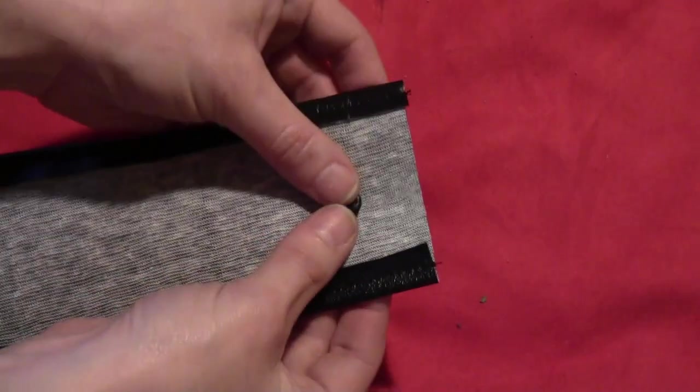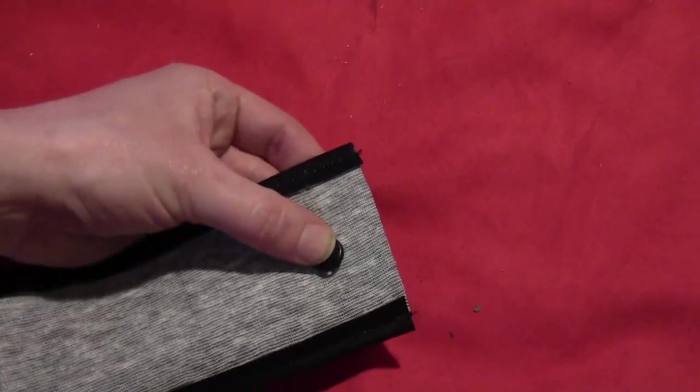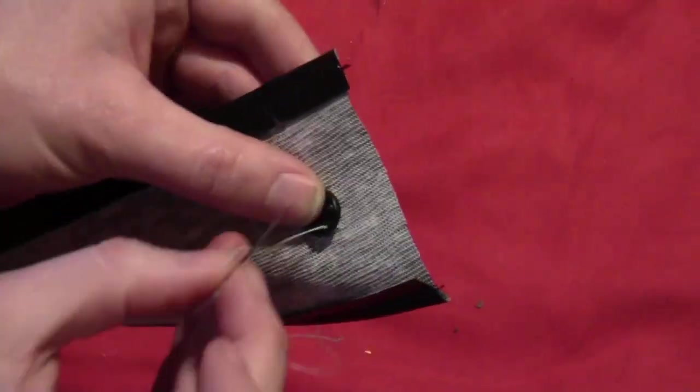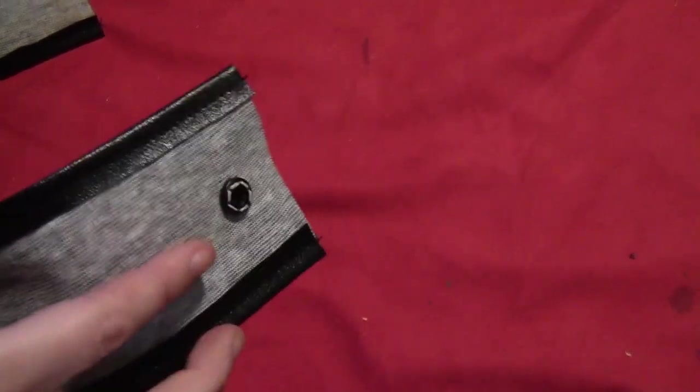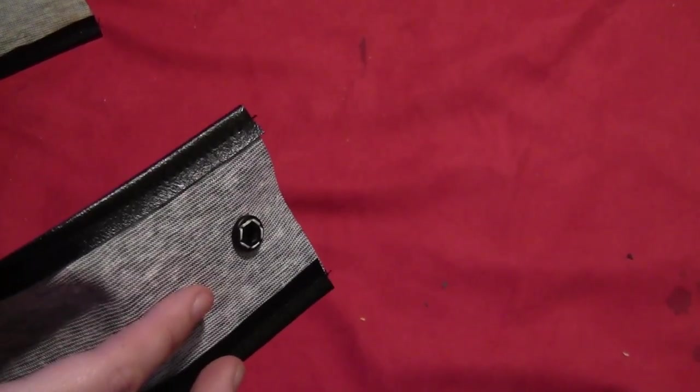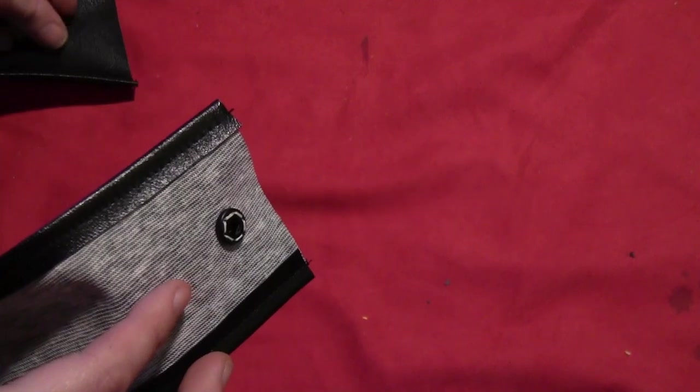Sew a couple of snaps on the underside of one end of the belt. Initially I only did one but later realized I needed two. Then sew the corresponding snap ends on the top part of the other end of the belt.